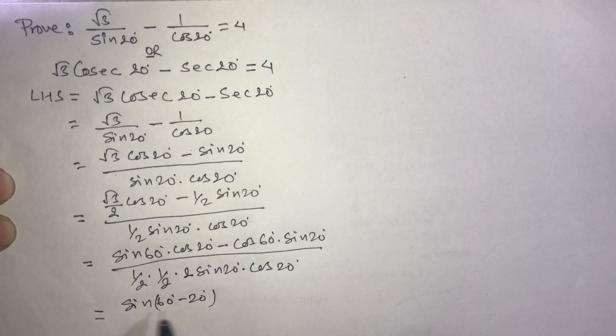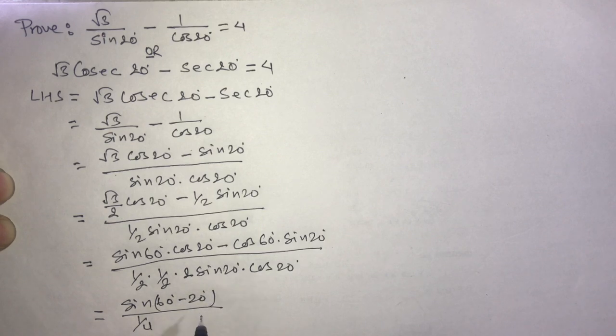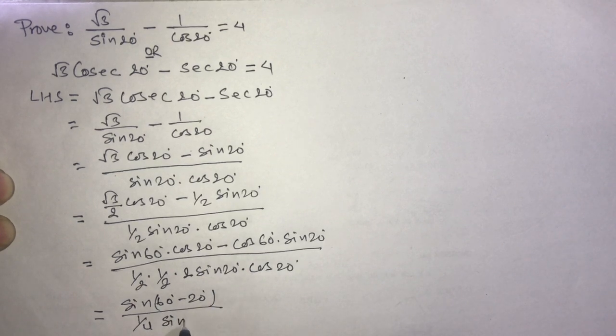The denominator becomes 1 by 4 times sine 2A, using the formula 2 sine A cos A equals sine 2A. This is sine 2 into 20, which is sine 40 degree.